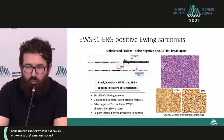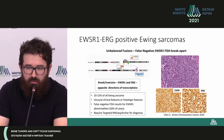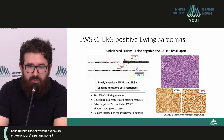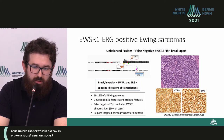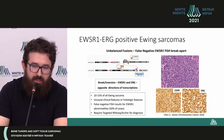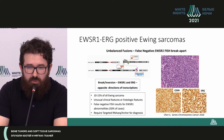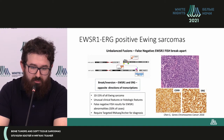The rearrangement in EWSR1 with this fusion partner shows that in 100% of cases they express the ERG marker, which is a vascular marker. Differentiation of these tumors must be done with angiosarcomas, and you also need to use other vascular markers specific for these tumors, such as CD31. We recommend these tumors be subjected to molecular genetic testing such as targeted RNA sequencing.